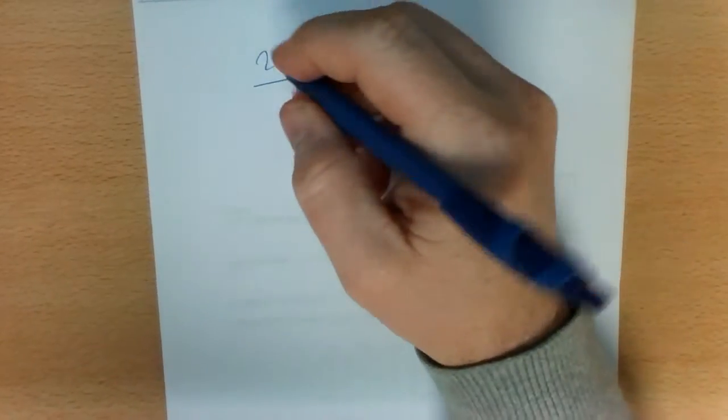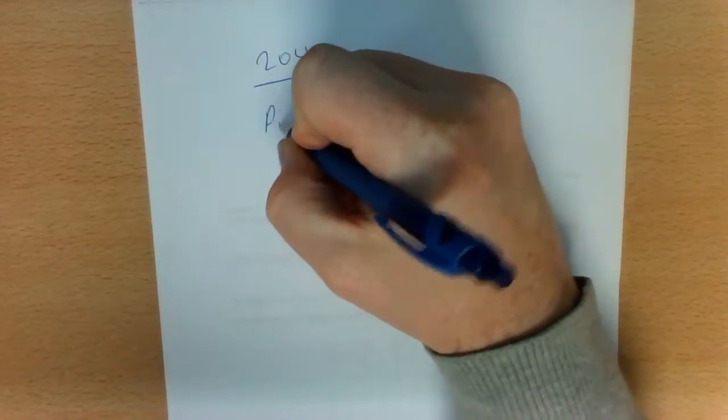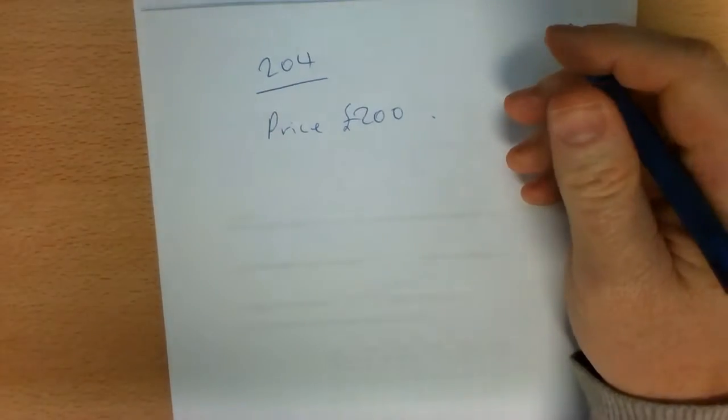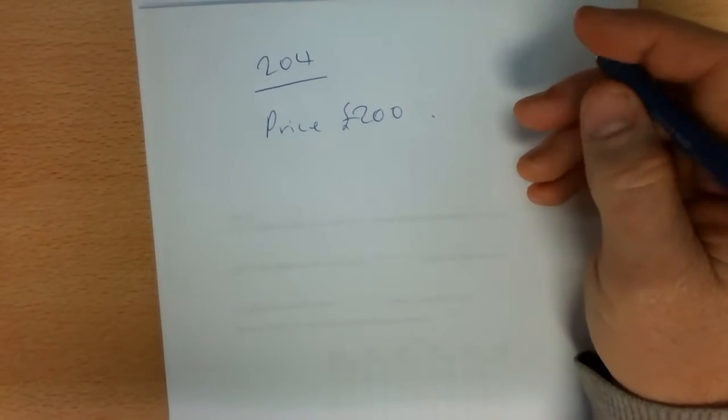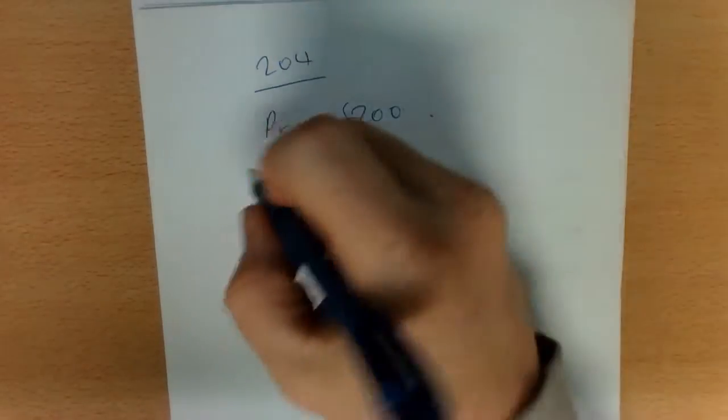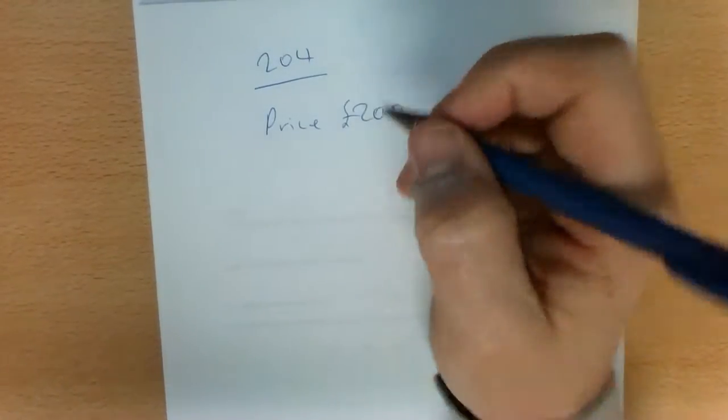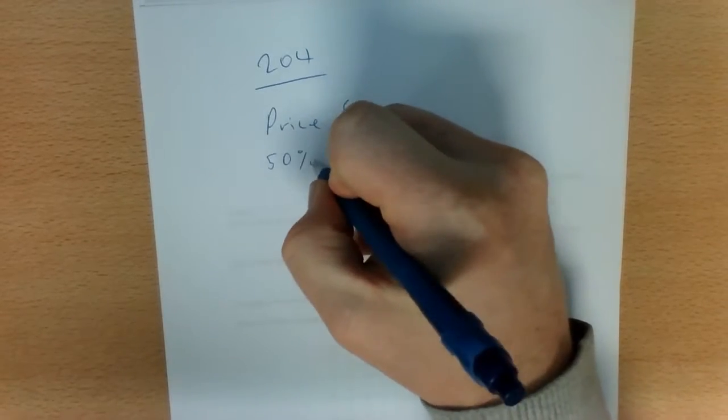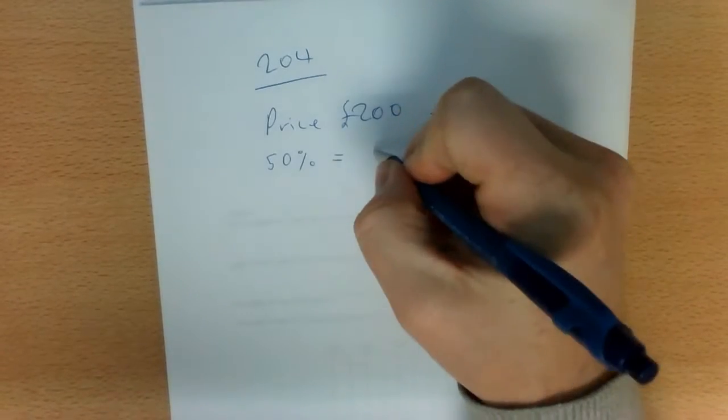So what I mean is, let's say something is 200 pounds and you want to say 50% of the price is 100 pounds. What people often write, instead of 50% of the price is 200 pounds, is they write 50% equals 100.